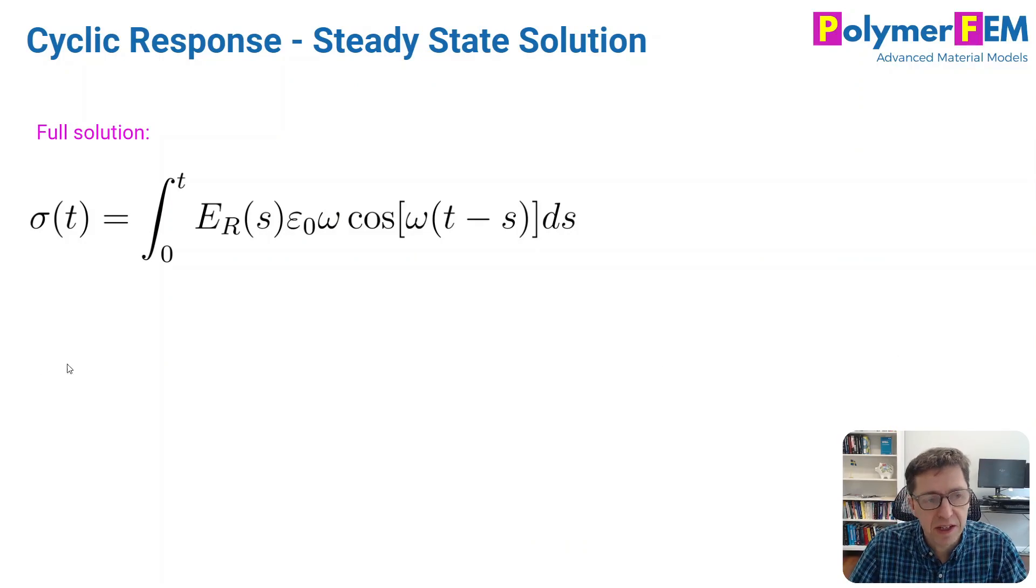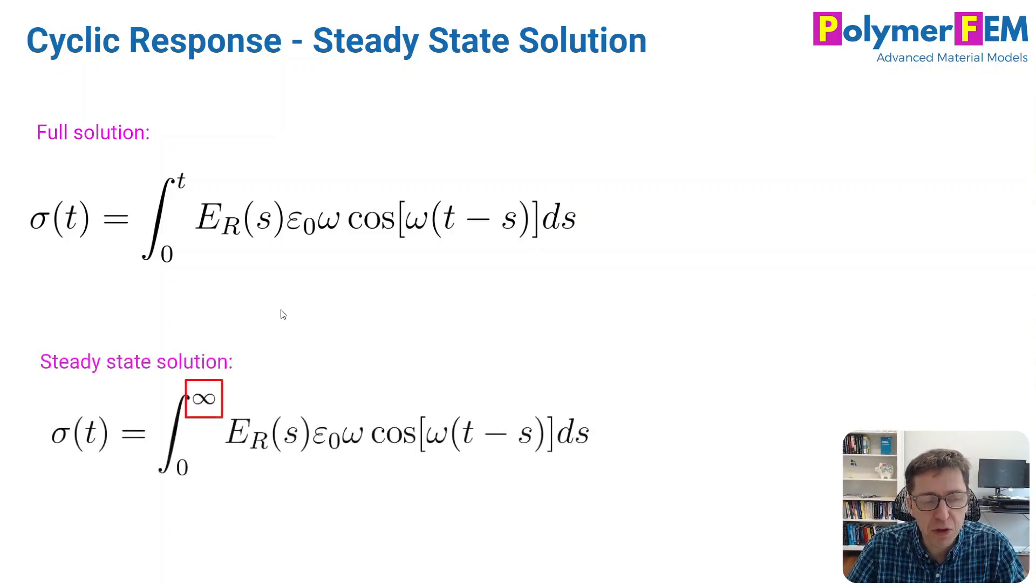And here again, it's the full solution that we just calculated, and this is the equation that derived. In many cases, this is not what you care about. You do care about the steady state response, not the full solution that contains this initial response as well. And it turns out you can convert from the full solution to the steady state solution by integrating to infinite times. Then the decaying functions would go away, and you get the results that you're looking at.